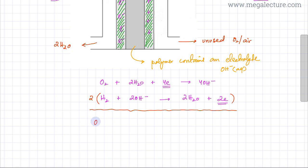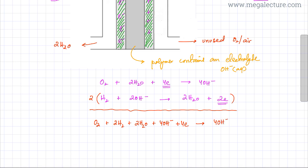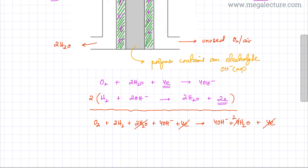After multiplying the left-hand equation by 2 and adding both equations, the left side gives O₂ + 2H₂ + 2H₂O, and the right side gives 4OH⁻ + 4H₂O + 4e⁻. Simplifying: the four electrons cancel out, the OH⁻ ions cancel out, and the water molecules simplify to leave just two water molecules. The overall equation is: O₂ + 2H₂ → 2H₂O.